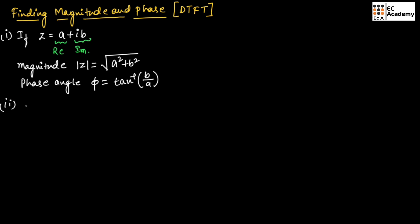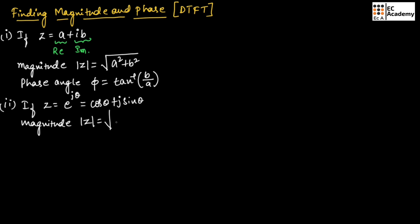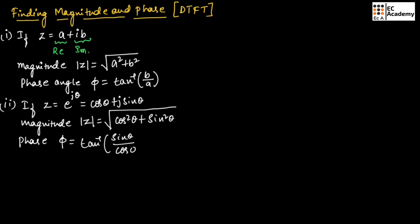Now in most cases, we will get Z equal to e^(jθ). We can write this as cos θ + j sin θ. The magnitude is |Z| = √(cos²θ + sin²θ), and the phase φ = tan⁻¹(sin θ / cos θ), which equals tan⁻¹(tan θ), so φ = θ.